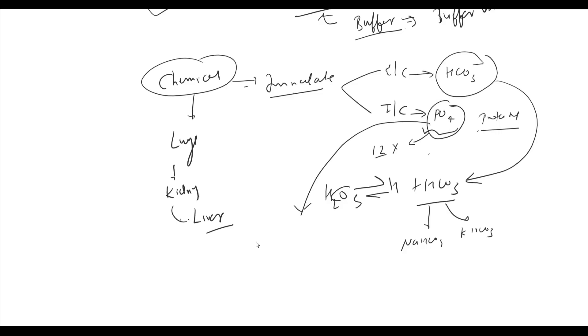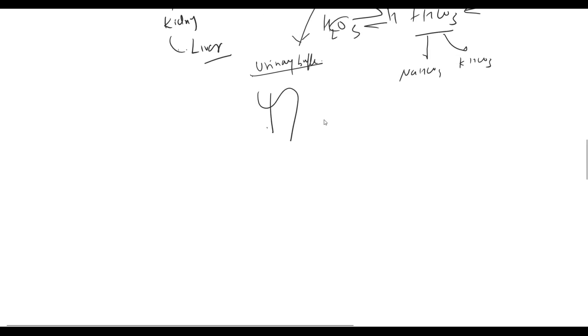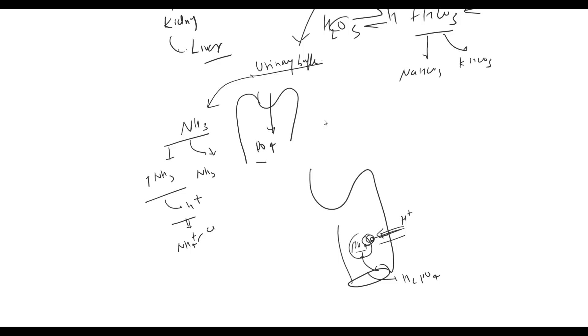Phosphate also forms part of the urinary buffer system. Phosphate filters in urine and combines with H+ secreted in the distal tubule, forming H2PO4. Phosphate not only combines with H+ but by removing H+, creates a gradient allowing continued H+ excretion. Ammonia is another important urinary buffer. This is an inducible buffer system. When acid load increases, ammonia production increases in tubular cells. Ammonia combines with H+ and excretes as ammonium salt.